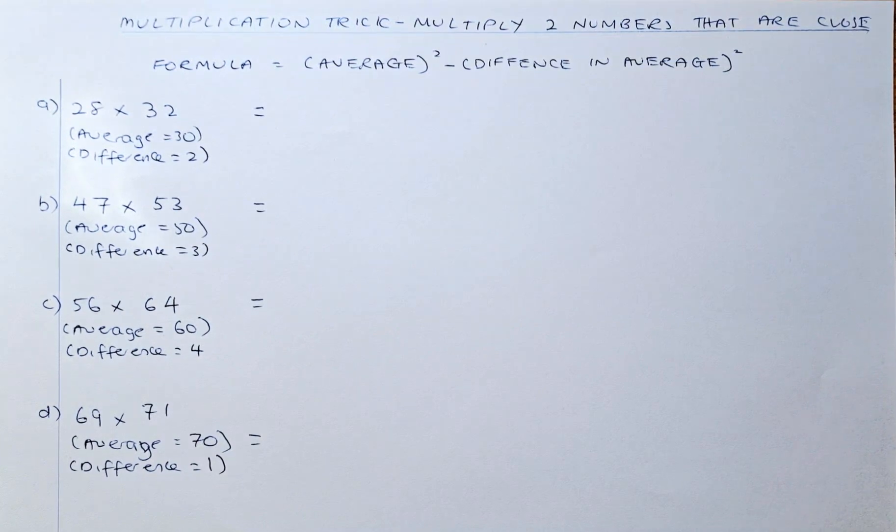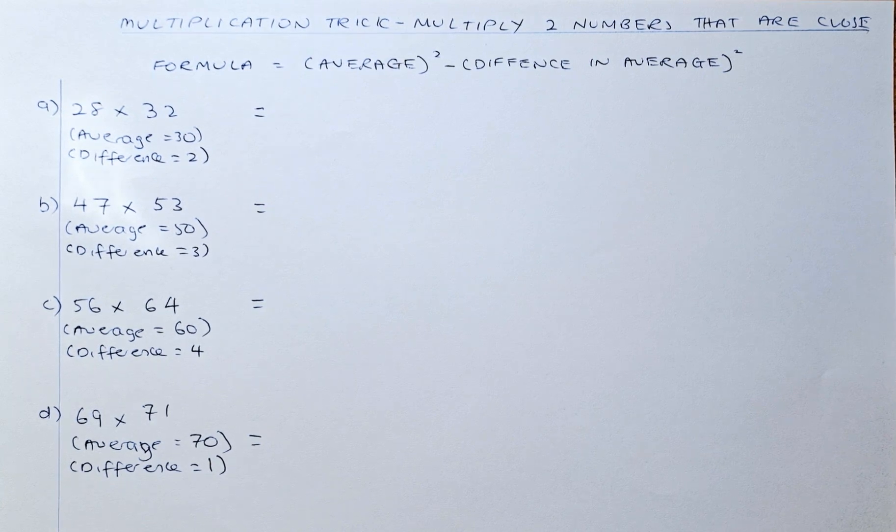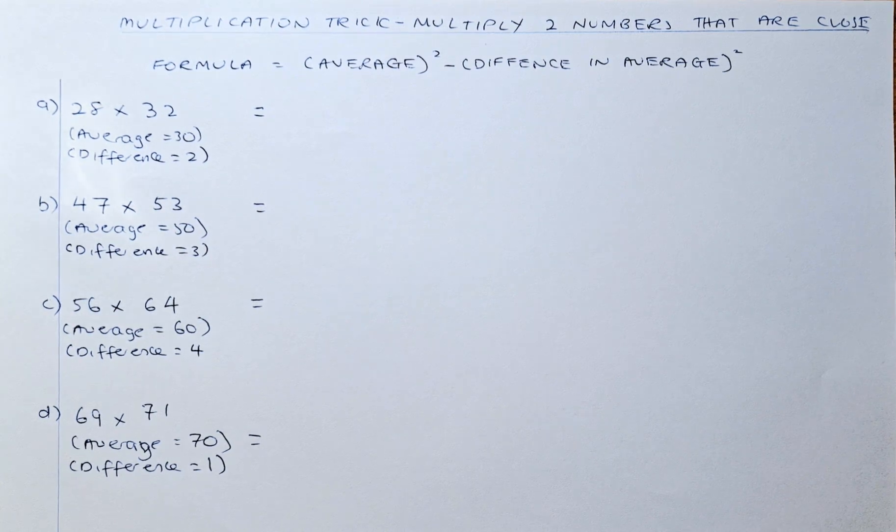Good day, and today we are going to do a multiplication trick. We're going to multiply two numbers that are very close to each other and we can find the average of two numbers as a whole number.